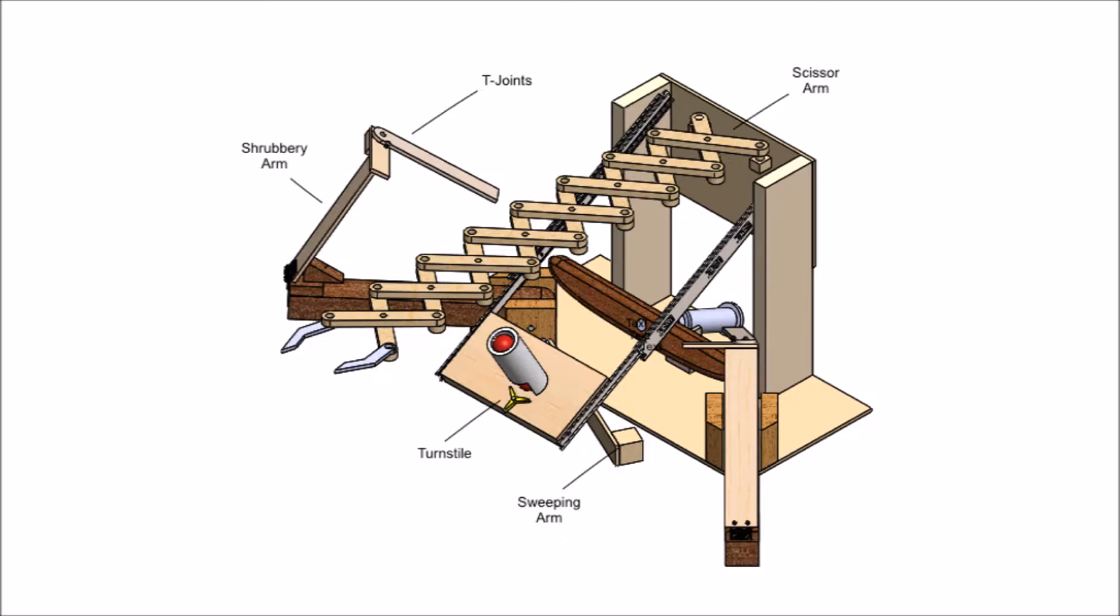Two T-joints are propelled forward with the force of a pneumatic piston and long bar. The momentum allows the joints to fall along the line of shrubbery, which is then reeled in with a winch system. A scissor arm can also be used to reach in, pinch the Holy Grail, and retrieve it.